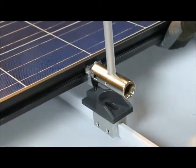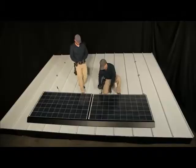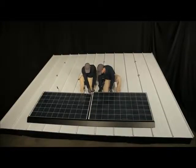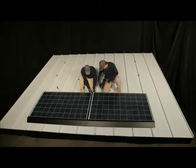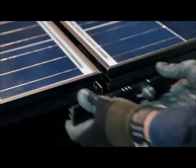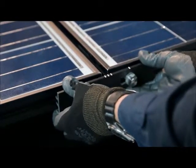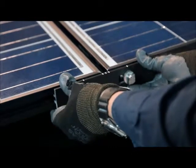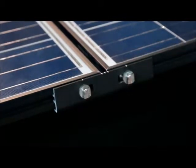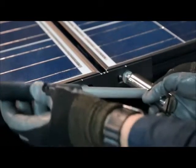After the first two modules and their associated leveling feet are installed, couple them together along the upper edge by installing an interlock at the module seam. Insert the interlock by hand into the groove at a slight angle, making sure to maintain a consistent gap between modules by referencing the alignment marks on the interlock.